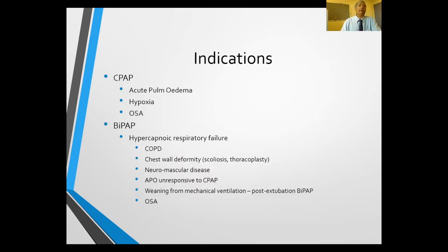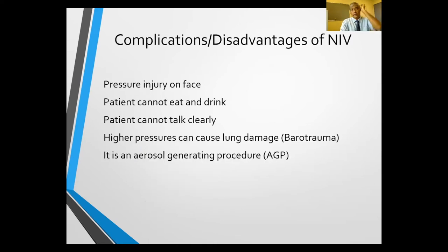Indications: CPAP is used for Type 1 respiratory failure where carbon dioxide is not an issue. BiPAP is used for hypercapnic — Type 2 — respiratory failure. Complications include pressure ulcers, inability to eat, drink or talk clearly, and high pressures can cause barotrauma. NIV also needs to be kept in mind as another aerosol-generating procedure.